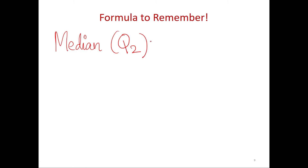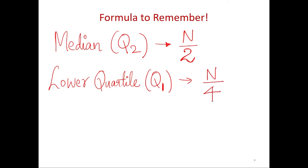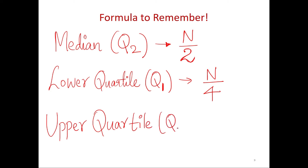The formula to remember: the median is also represented as Q2, and you are talking about 50% of your total data, so the formula is N divided by 2. The lower quartile Q1 is one-fourth of the total data, so you divide N by 4. The upper quartile Q3 is where you have 75% of the data, so you have three-fourths of N, written as 3N over 4.